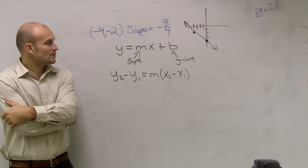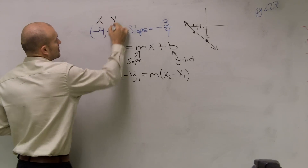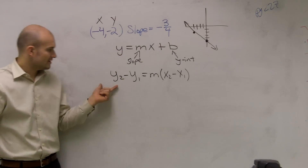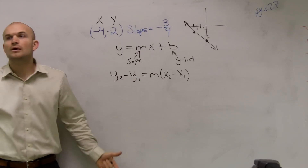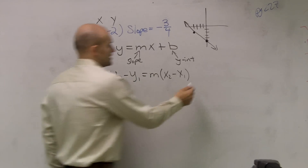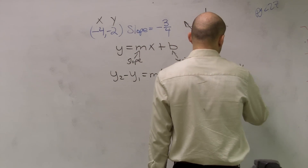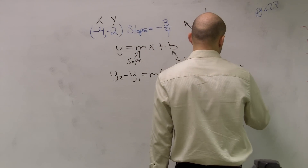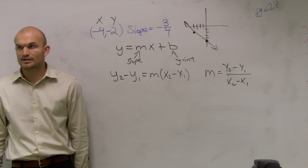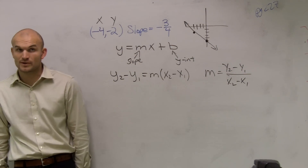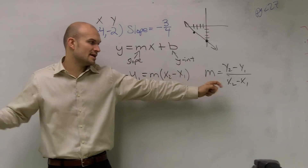Now, you might be saying, well, Mr. McLogan, we know a point only has an x and a y, so why are you giving us an x1 and a y1 and an x2 and a y2? The reason is because this equation actually comes from our slope formula. Remember the slope formula: y2 minus y1 over x2 minus x1. That comes from when you're given two points, which we'll go over later today.